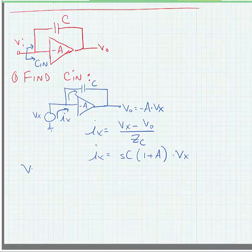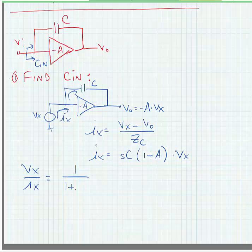Now, what we're looking for is the effective impedance that we see looking in. So, we're going to take the ratio of Vx over Ix, the impedance looking into the port. And we'll see that it's equal to 1 divided by 1 plus A times Sc. In other words, the effective capacitance looks 1 plus A times bigger.